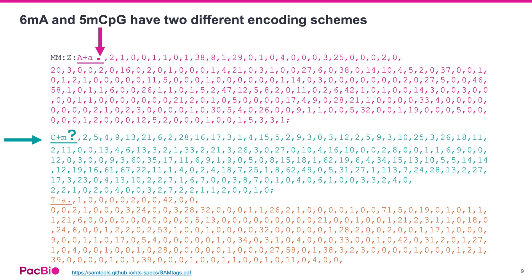Coming back to the example MM tag, we see that 6mA calls are annotated with the A+A period, followed by the encodings for the detected bases with modifications. And the 5mC calls are annotated with the C+M question mark, followed by the encodings for bases with modifications.